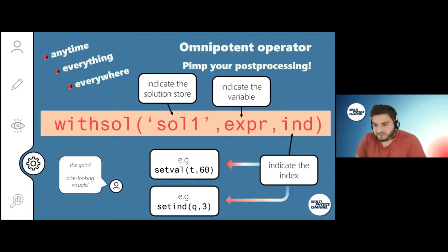For the withsol operator to work, you need to indicate first the solution store, which is solution one. Then you indicate which variable you want to plot, that can be a temperature or a velocity field. Then you say where it should be, the index. If you have a time dependent study, you want to set this argument as setval t 60, for example, that means it evaluates the solution at t equals 60 seconds. What you gain from this is that you have nice looking visuals.